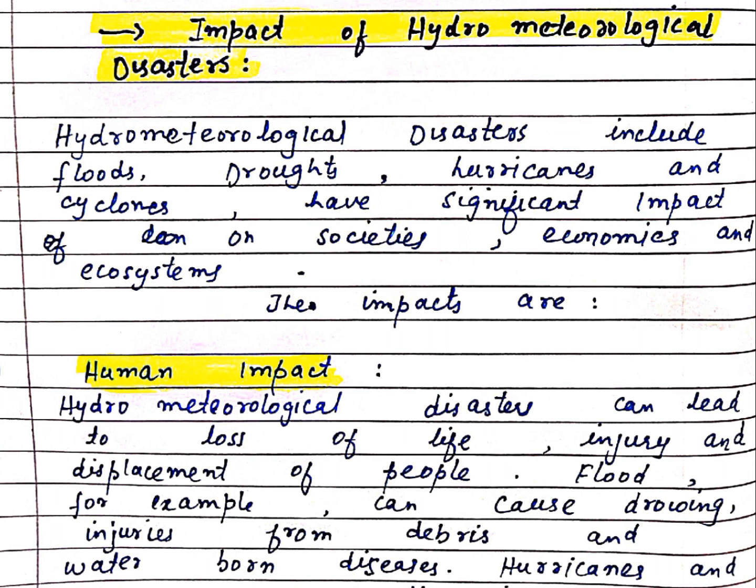What are the impacts of hydrometeorological disasters? Hydrometeorological disasters include floods, droughts, and hurricanes. Cyclones have a significant impact on societies, economies, and ecosystems.